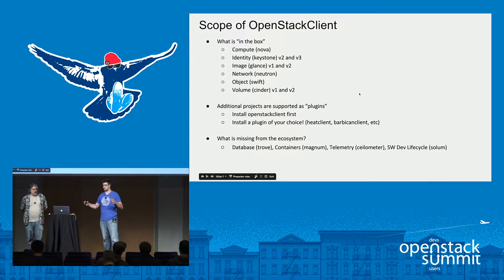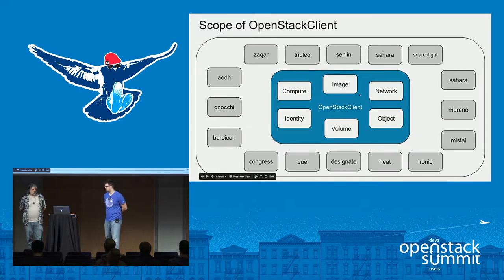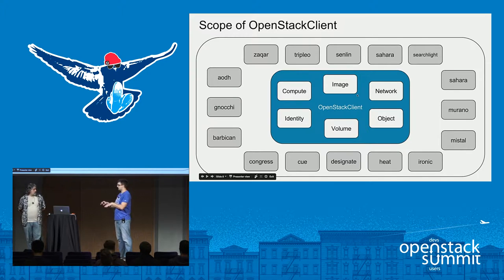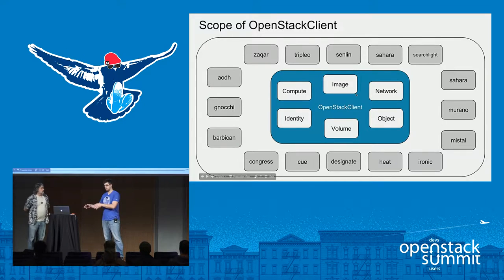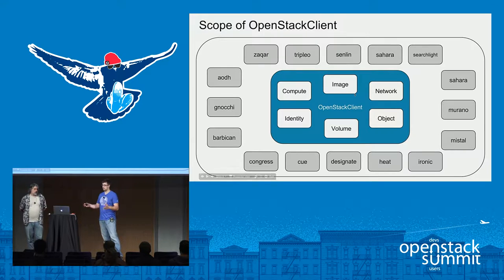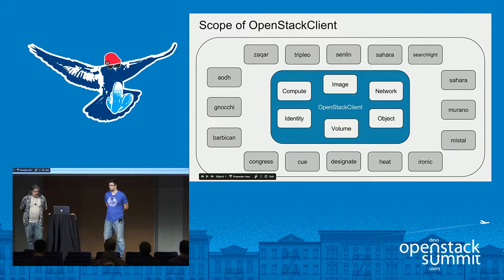So basically when we talk about our ecosystem, you can picture it like this. In the blue box — no relation to the IBM product — is what you get when you install OSC. So pip install OSC, you're going to get compute, identity, volume, image, network, and object. And then if you want some of the other stuff, you can install the plug-ins. This is just the way we decided to architect it because the OSC team doesn't scale — there's only a few of us — and we can't all add support for all the existing commands. So we allowed each project team to maintain their own commands in their own repos.